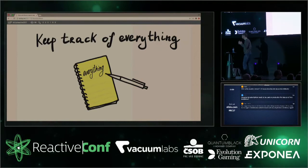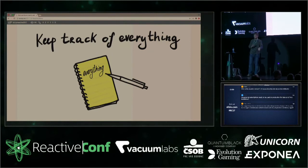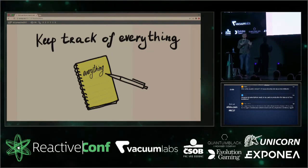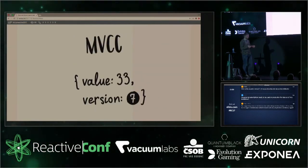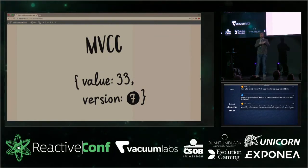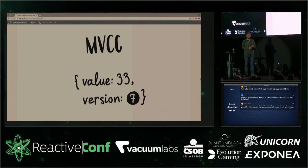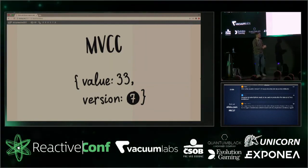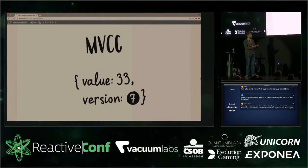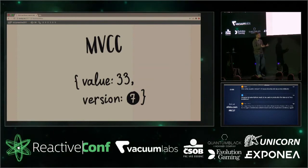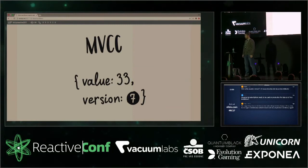The way to live in this relative world where everything is changing and relative to everyone is to keep track of everything. When you send something over the network — an operation, data, whatever — assign an ID to it, assign a version, annotate the data with more information so you know where it comes from, where it's going, who produced it, and whether it's still current or already stale.